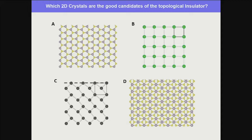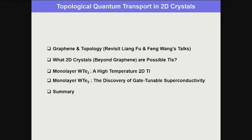Some are hexagonal with different atoms, some square, some rectangular, more complicated patterns. In general, they are all very simple Bravais lattices with only one or two atoms. My talk will be organized as follows: I'll summarize what Liang and Feng told us in my own way, and try to convey the criteria or intuition to find a 2D topological insulator.